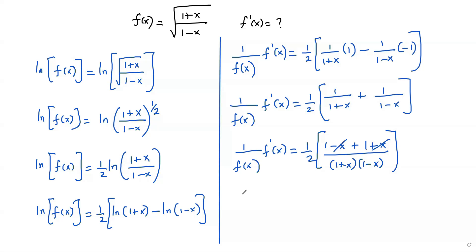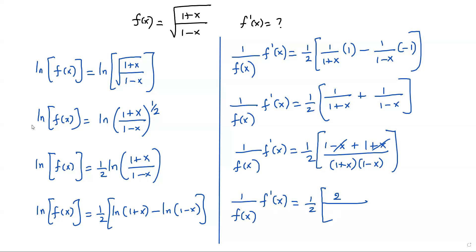So I get (1/f(x)) · f'(x) = (1/2) · (2 / ((1+x)(1−x))). Combining 1+1 = 2, and recognizing (1+x)(1−x) is in the form (a+b)(a−b) = a²−b², with a=1 and b=x, this equals 1−x². The 2 in the numerator and the 2 cancel out, leaving (1/f(x)) · f'(x) = 1/(1−x²).